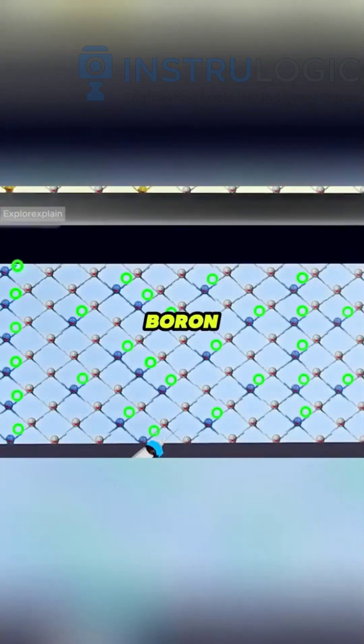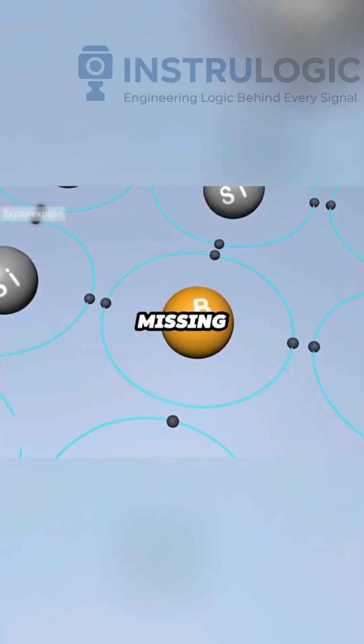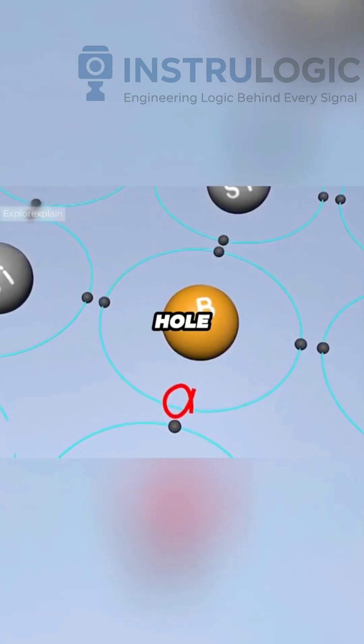On the other side, we add boron, which has three electrons. This creates a missing electron called a hole. This is the p-type.